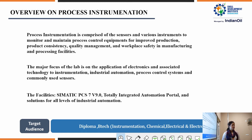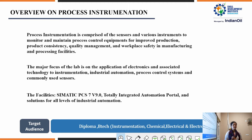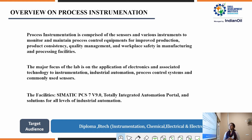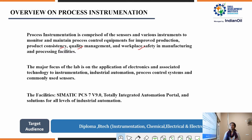Let's have an overview of process instrumentation. Generally, what is process instrumentation? It is comprised of two words: process and instrumentation. Process deals with physical parameters in industrial applications, and those physical parameters are generally non-electrical in nature. Instrumentation deals with the conversion of these parameters into electrical form, which is fed to the controller for any control operation. Process instrumentation comprises sensors and various instruments to monitor and maintain process control equipment for improved production, product consistency, quality management, and workplace safety in manufacturing and processing facilities.